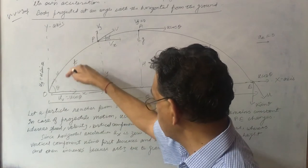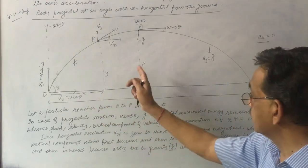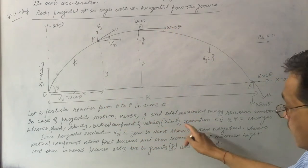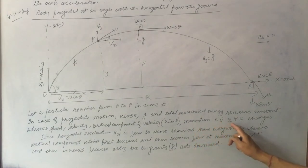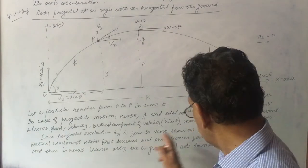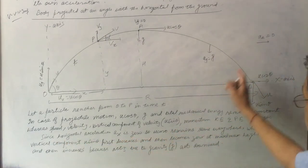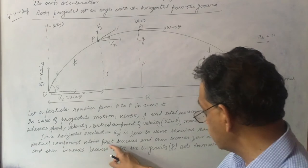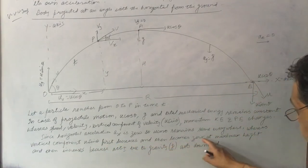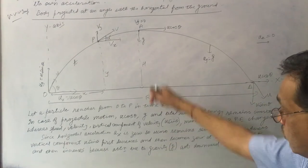Speed, velocity, vertical component u sin θ, momentum, kinetic energy, and potential energy all change because g acts downward. Vertical velocity decreases going up and increases coming down. Since horizontal acceleration ax = 0, u cos θ remains the same everywhere, while u sin θ first decreases, becomes 0 at maximum height, then increases.